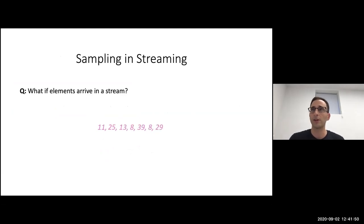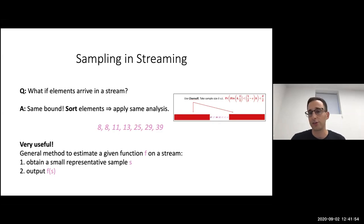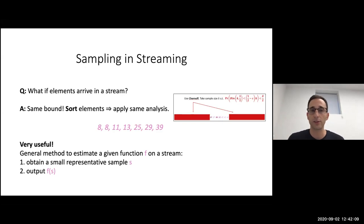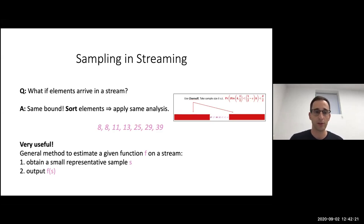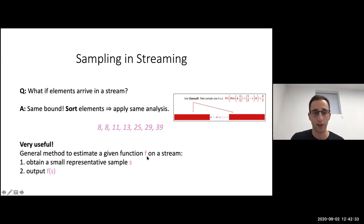What if elements arrive in a stream? Elements arrive one by one, like a streaming algorithm. This sampling procedure is tailored for streaming — it's very easy and works the same way. We can think of the elements being sorted; the sampling algorithm doesn't care about the order and we get the exact same analysis. This gives us a streaming algorithm to compute an approximate median: you just sample elements with some small probability p corresponding to the desired sample size, then compute the median of the elements you saw. This is a very general method: you want to compute some function f, you first obtain a small representative sample S of the stream, then output f on your sample.